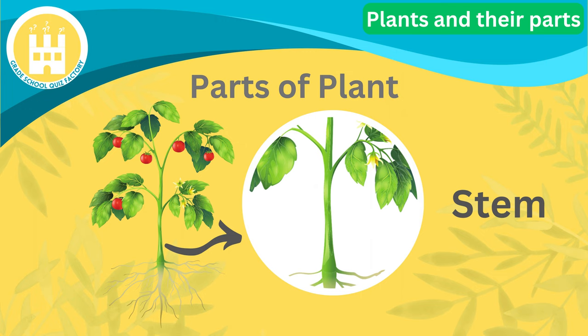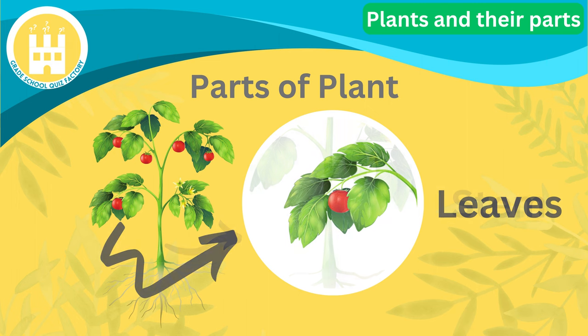Next, stem. The stem acts like a highway connecting the roots to the other parts of the plant. It transports water and nutrients from the roots to the leaves and flowers. Number three, leaves. Leaves are like the solar panels of plants. They make food for the plant through a process called photosynthesis, using sunlight, water, and carbon dioxide.